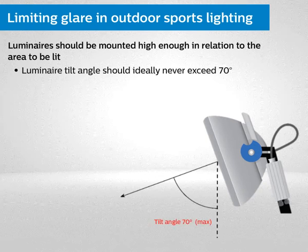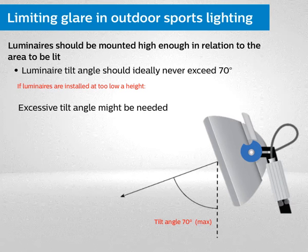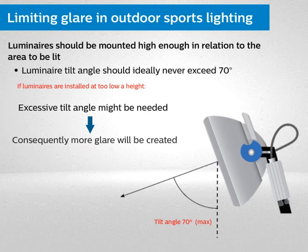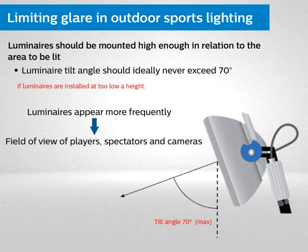Luminaires should be mounted high enough in relation to the area to be lit. The luminaire tilt angle should ideally never exceed 70 degrees. If luminaires are installed at too low a height, an excessive tilt angle might be needed and consequently more glare will be created. Luminaires will appear more frequently and easily in the field of view of players, spectators, and cameras.